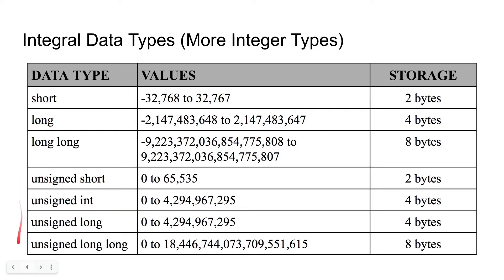There are also unsigned integers. Instead of being able to go negative, they go from 0 to double the amount. So 32,768 plus 32,767 is 65,535. The same applies for unsigned int, unsigned long, and unsigned long long — it is just a way to go up to even higher numbers, but these numbers cannot be negative.